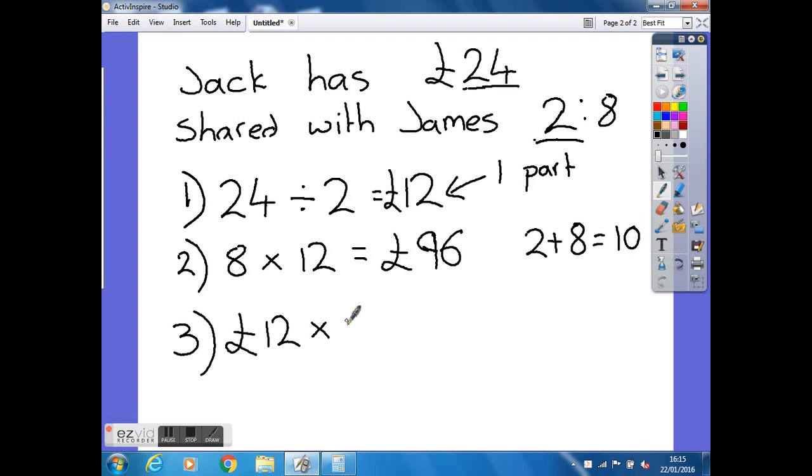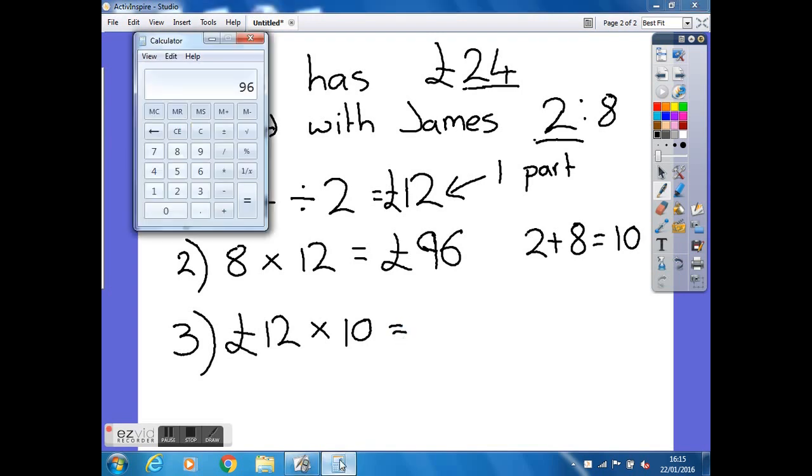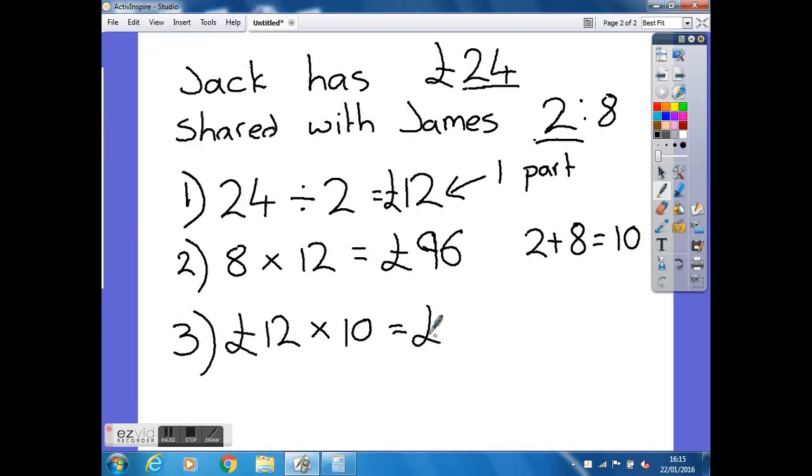So we can do your 12 multiplied by 10. Again, bring back your calculator if it's needed. Which shows us that the total amount they had to share between them was £120. And that is the end of the ratio questions. Thank you.